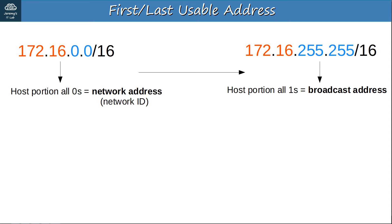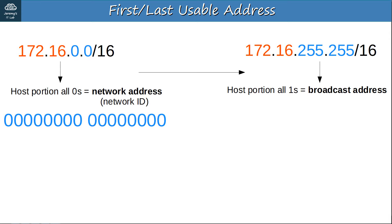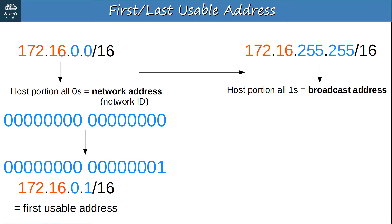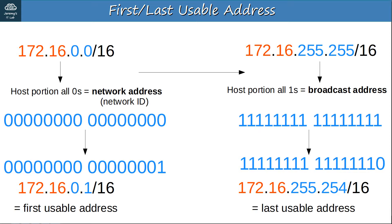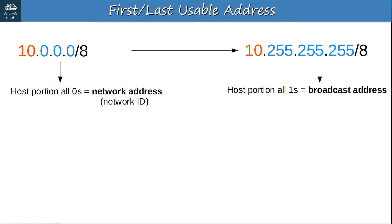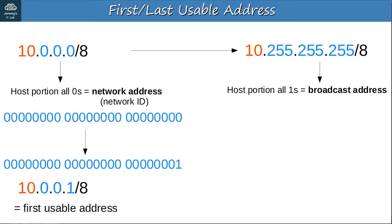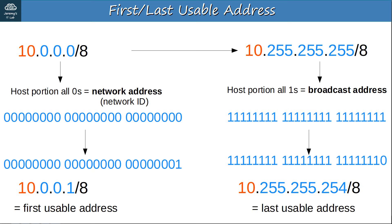Next let's do the same for this class B network, 172.16.0.0/16. The address with a host portion of all 0s is the network address. Add 1 and you get 172.16.0.1 — that is the first usable address on the network. The address with a host portion of all 1s is the broadcast address. Subtract 1 and you get 172.16.255.254, which is the last usable address. Finally, for class A network 10.0.0.0/8: the network address is 10.0.0.0, the first usable address is 10.0.0.1, the broadcast address has all 1s in the host portion, and the last usable address is 10.255.255.254.